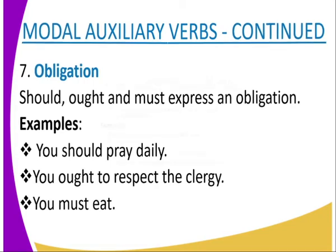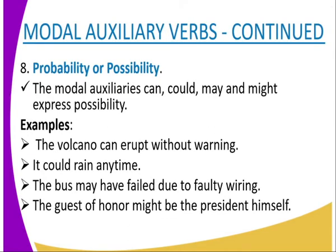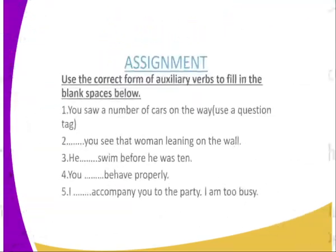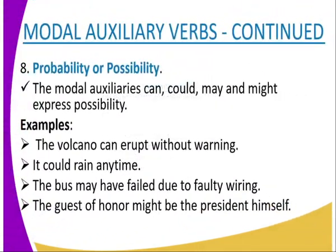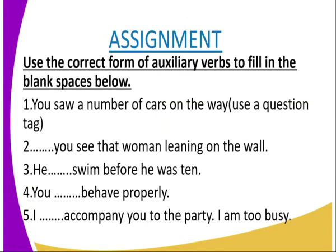We also have modal auxiliary verbs used to express probability and possibility. Those words include: can, could, may, and might. Examples: 'The volcano can erupt without warning' — expresses possibility. 'It could rain anytime' — expresses possibility. 'The bus failed due to faulty wiring' — expresses probability. 'The guest of honor might be the president himself' — 'might' expresses probability or possibility.